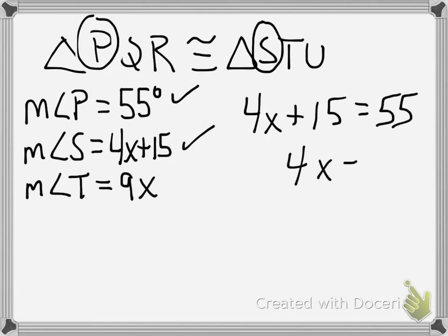So when you do the algebra very quickly, you get that 4x is equal to 40, and that x is equal to 10. However, if you look at the actual question itself, it asks for you to find what classified triangle STU by its angle. So you need to know what all three angles of triangle STU are going to look like.